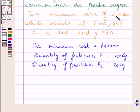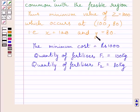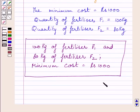Since z represents the cost, the minimum cost is Rs. 1000. Since x represents the quantity of fertilizer F1, the quantity of F1 is 100 kg. Since y represents the quantity of fertilizer F2, the quantity of F2 is 80 kg. This is our required answer. This completes the session. Hope you understood the solution. Take care and have a nice day.